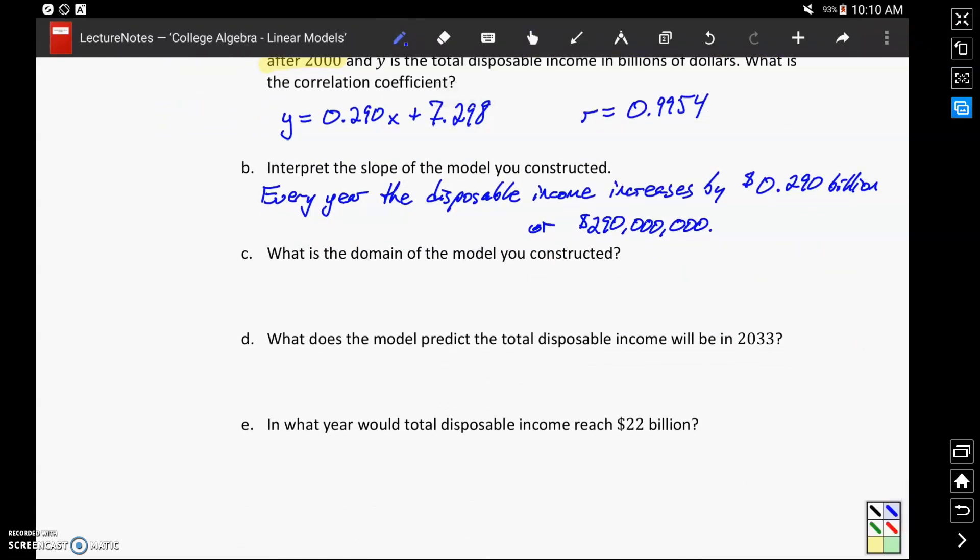In terms of domain, we could say, in this case, negative infinity to infinity would be appropriate, because 0 could be included, since that corresponds to the year 2000. And if we're including negative values, something like negative 10 really just means 10 years before 2000 or 1990. So both positive and negative values would make sense to include here.